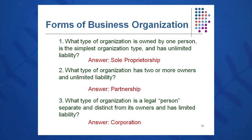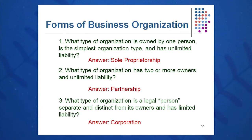What type of organization has two or more owners and unlimited liability? The answer is a partnership. And third, what type of organization is a legal person separate and distinct from its owners and has limited liability? That is a corporation. These are the three key types, though there are others, and we'll go over one other variation in a moment.